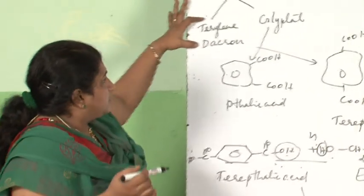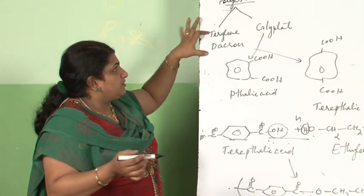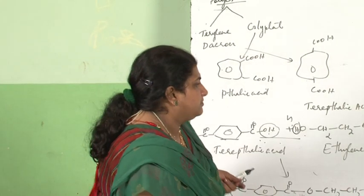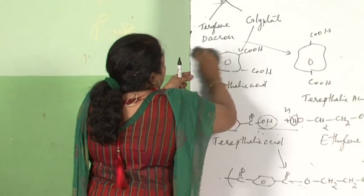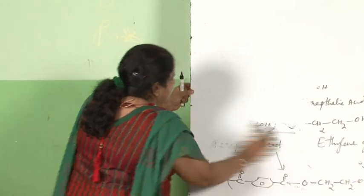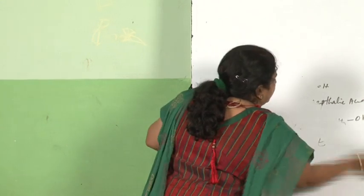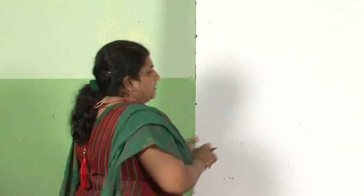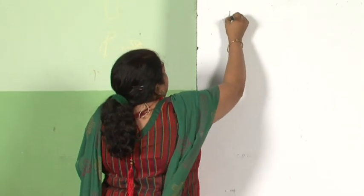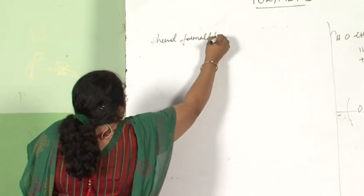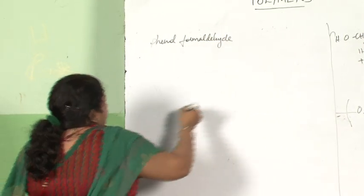Polyesters — terylene/Dacron and glyptol — should now be clear. Next we come to phenol-formaldehyde polymers. There are two types of phenol-formaldehyde resins: Novolac and Bakelite.